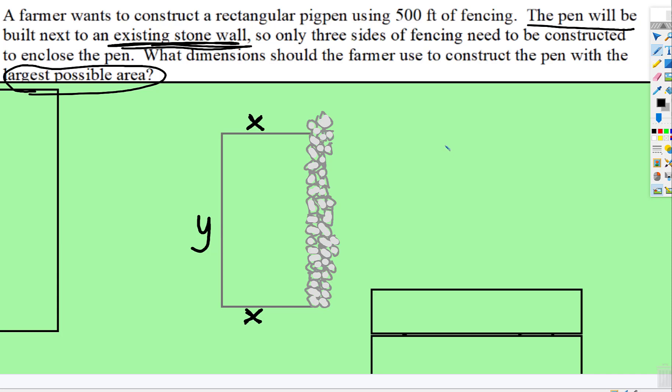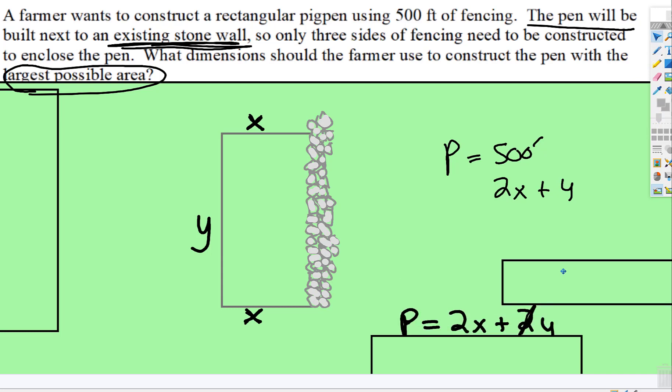Well, that means that our perimeter is 500 feet, and there's two of those x's and one of those y's. Normally with perimeter, there's two sides of a rectangle, right? Two vertical sides, two horizontal sides, but this time there's only one.